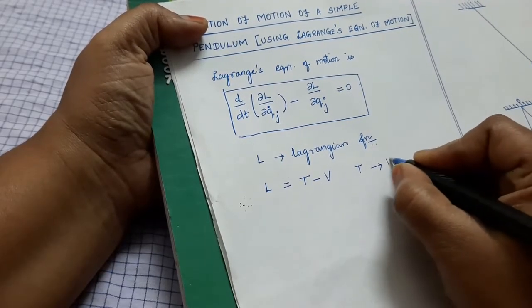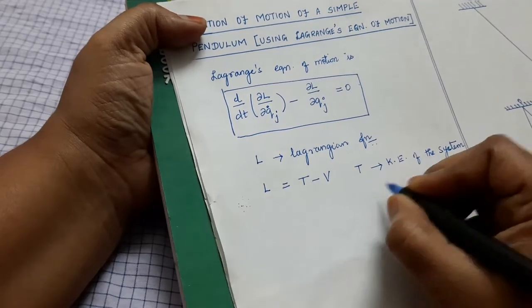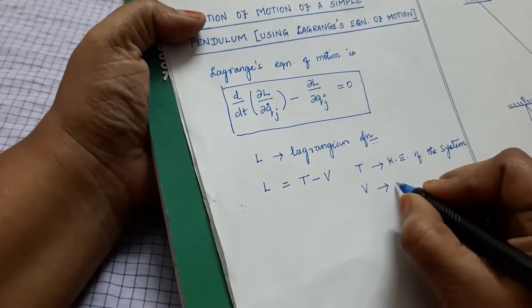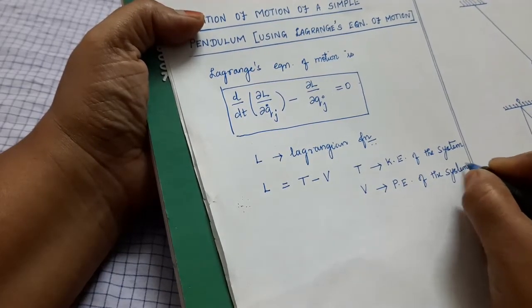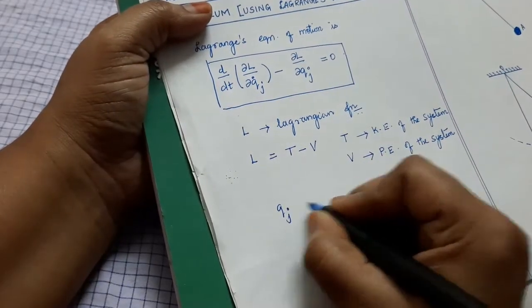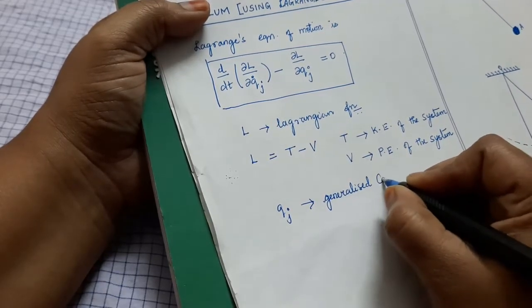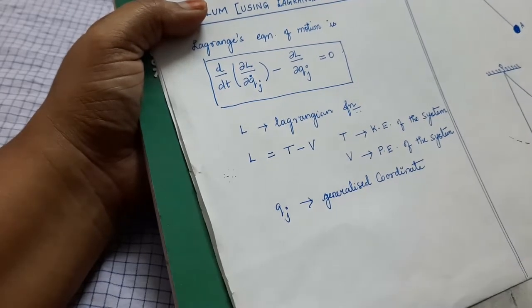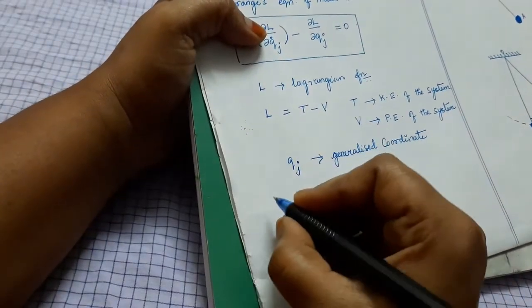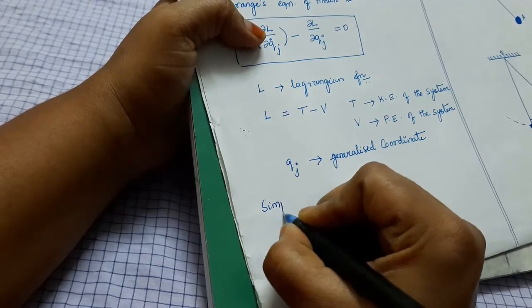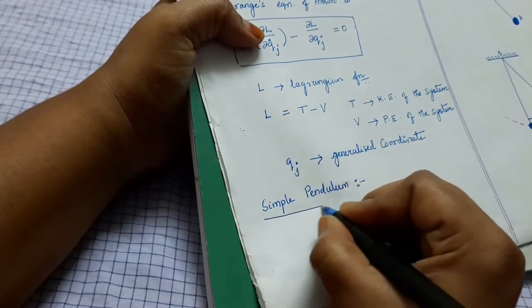Here, T is the kinetic energy of the system and V is the potential energy of the system. And qⱼ is the generalized coordinate. Now let us apply this Lagrange's equation of motion to our problem, that is the simple pendulum, to find its equation of motion.